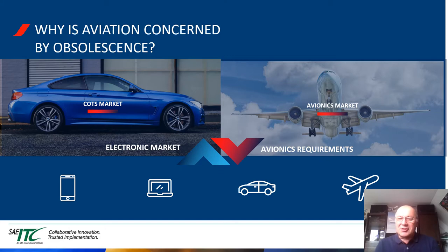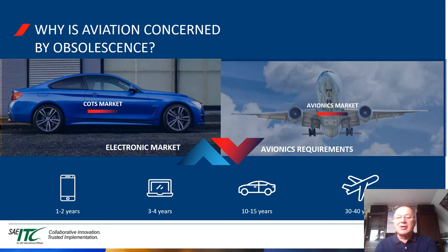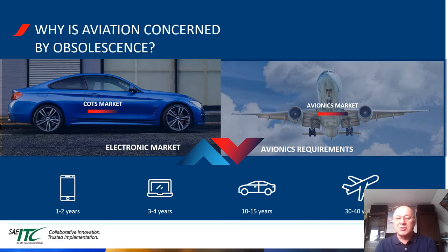Let me ask you a rhetorical question: what is the average lifetime of your smartphone? You will tell me one to two years. The average life of a laptop is three to four years. The average life of a car — some people driving a Rolls-Royce will say 50 years — but an average car will last 10 to 15 years. But if you are talking about an aircraft, the average lifetime is 30 to 40 years, which is quite long. It can be compared to trains and ships, because aircraft is not an isolated case — those complicated machines are built to last long.